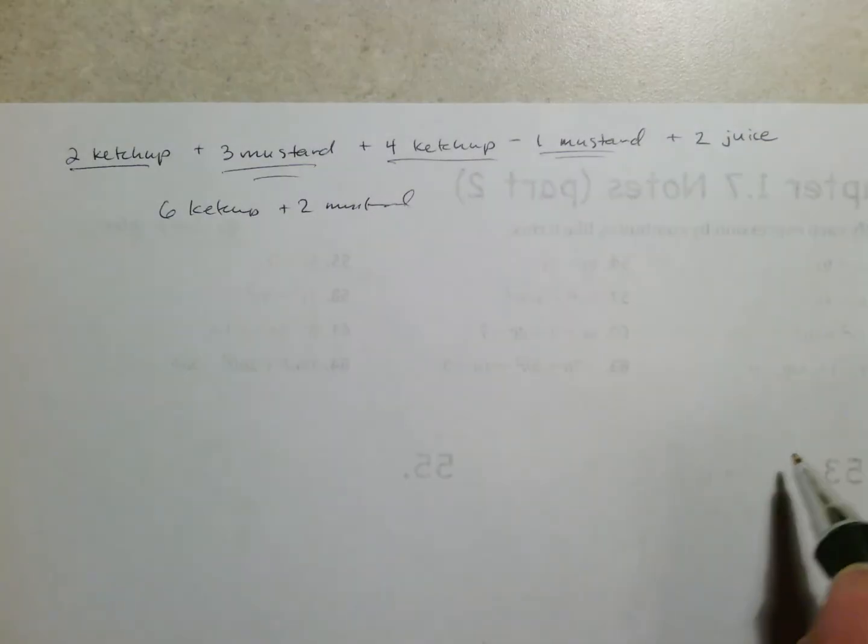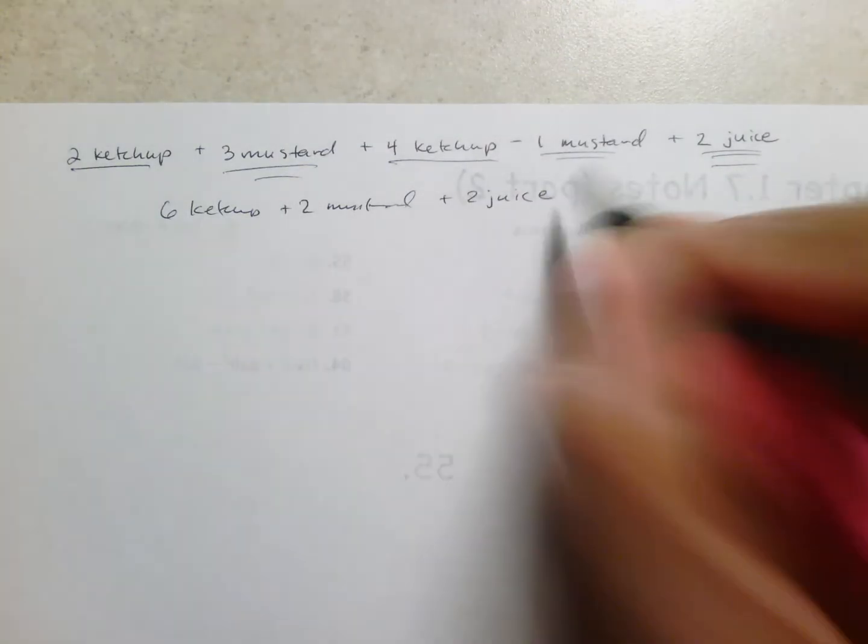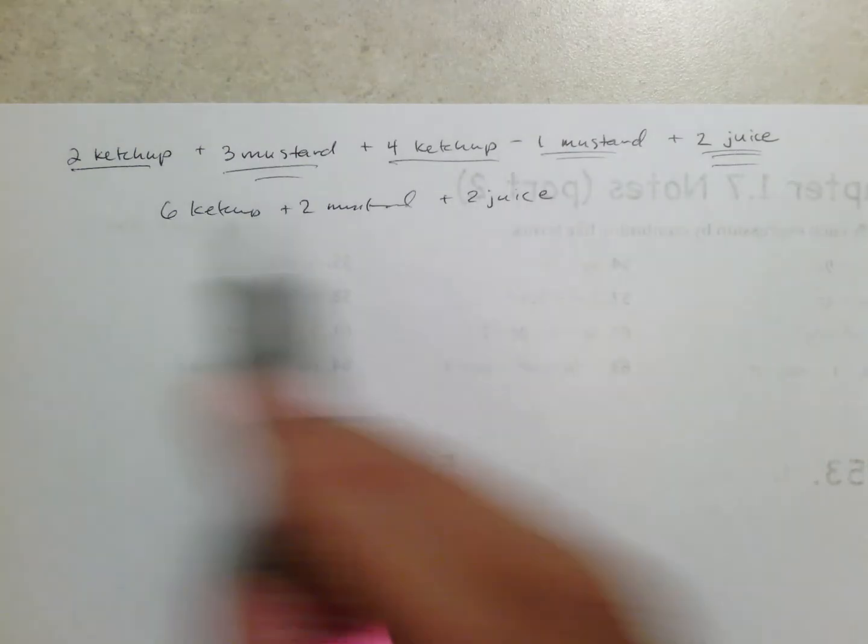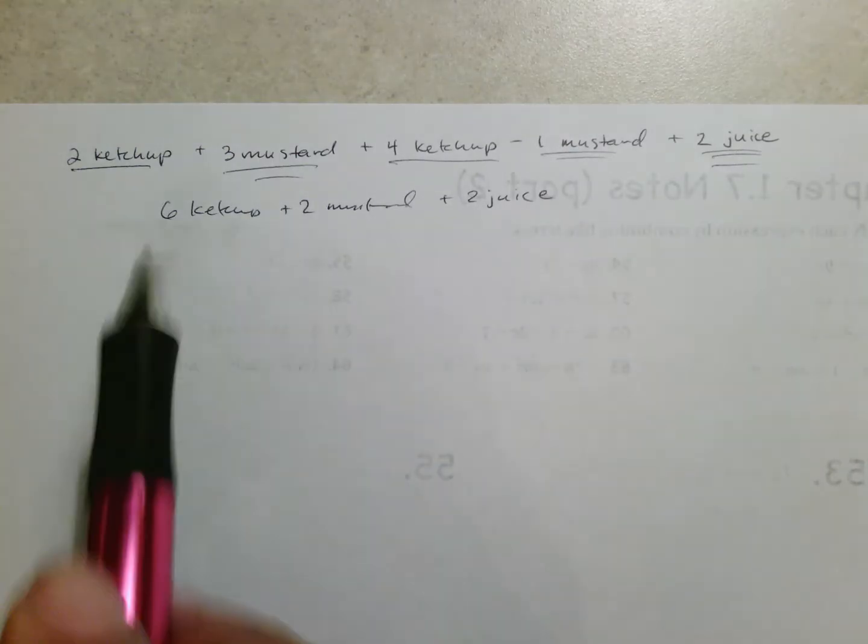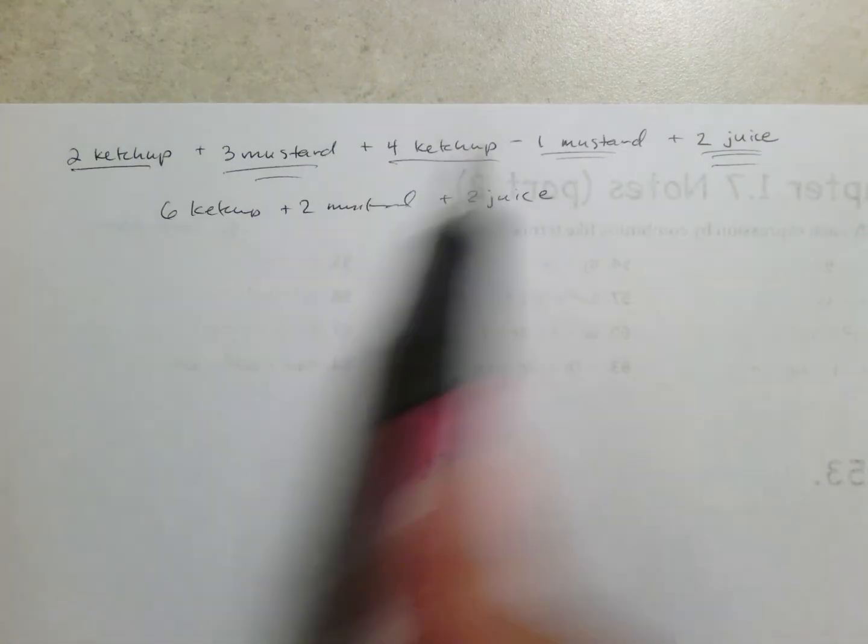Three minus one makes two mustard. And if there is just some juice sitting off to the side you simply bring it down and add it to the pile. Because that's where it belongs. So again your job is to organize. That's what combining like terms is. It's taking anything that is the same and it's messy. So you simply put everything together in a nice simplified form.